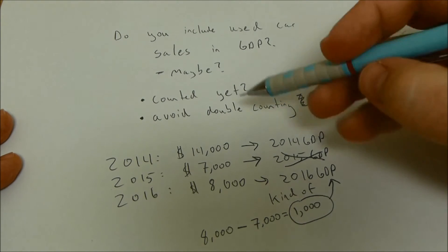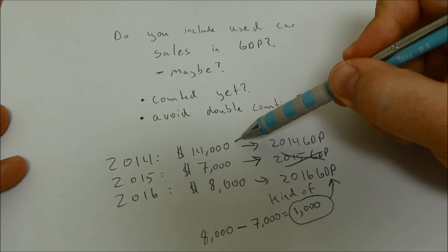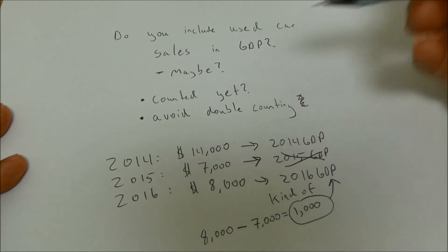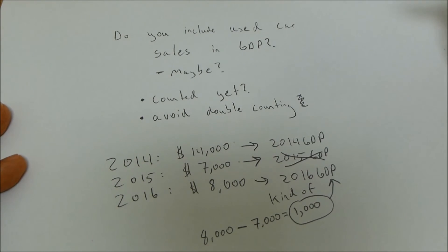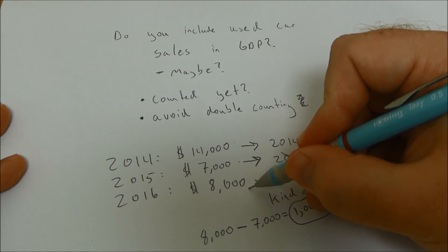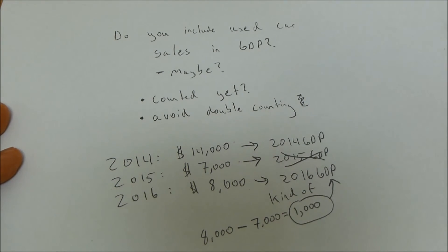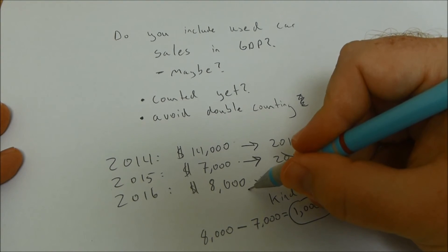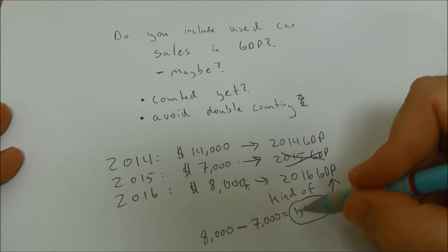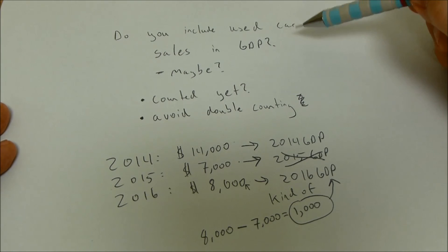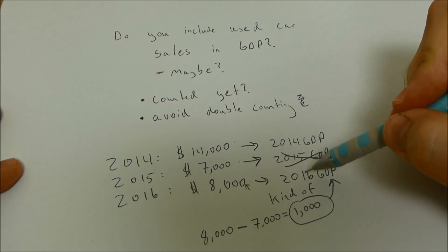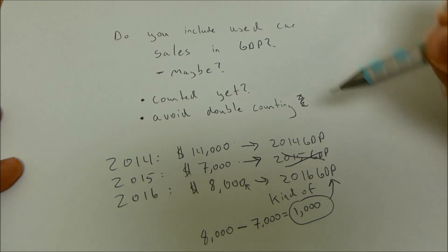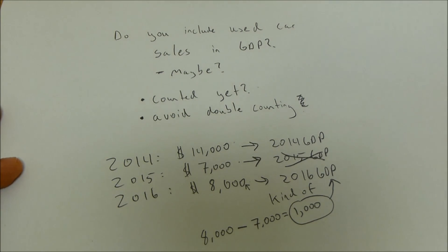Another way to think about it: the 2014 sale is a final good, and then in 2015 and 2016 the purchase of the car is an intermediate good — that doesn't get counted. However, the final value added of $1,000 does get counted. This thought process can be applied to almost anything that's sold used: look at the value added of the product, don't double count, and ask whether you've counted it yet.